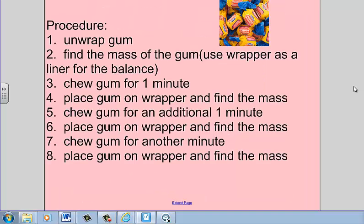The next step is to do the procedure. So you're going to unwrap the piece of gum. Place the piece of gum on the electronic balance using the wrapper as a liner. So first you take the mass of the gum before you start chewing it and record that as the zero minute mark on your data table.